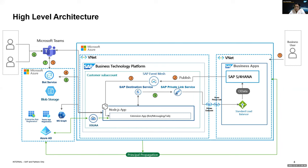We have the bot service, the blob storage, and the enterprise app registration — these are some of the technical services we will be leveraging. An instance of the bot service is used to connect the bot to MS Teams. From a BTP perspective, we have the Cloud Foundry runtime where the extension application is running. We are leveraging SAP Event Mesh for receiving events from SAP S4 HANA. For connectivity, we have the destination service and the connectivity service or the private link service, with which we can seamlessly connect to the SAP S4 HANA system. You will see in detail how these services are leveraged and what configurations are required in each of these platforms.